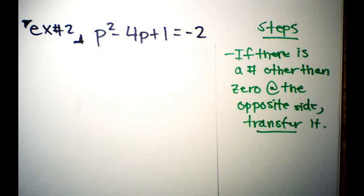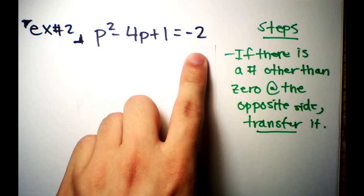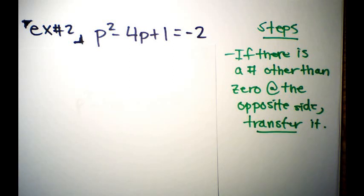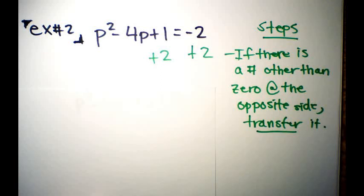Example number two: p² - 4p + 1 = -2. Notice there's a number on the right side, not zero. If there are terms other than zero on one side, transfer them so one side equals zero. Here we add 2 to both sides, giving p² - 4p + 3 = 0.